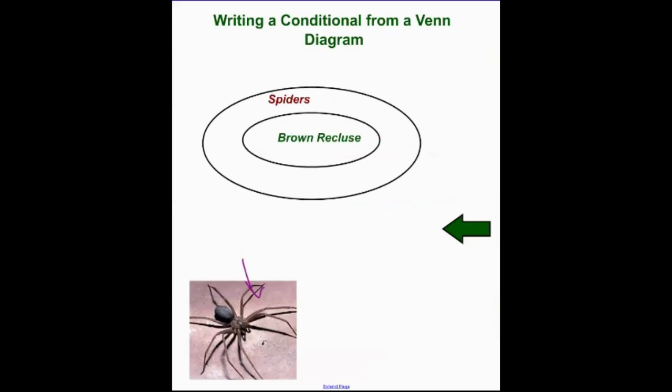Let's go on to the next example. Writing a conditional from a Venn diagram. This is the one that we're going to expect you to be fairly good at. Because again, we're going to go back to the if P, then Q. This is my if part, and this is my then part. This is my Q, and this is my P. All we're going to do is just write if P, then Q. If it is a brown recluse, then it is a spider. That's exactly what we've got here.